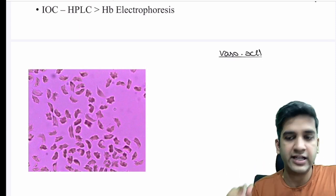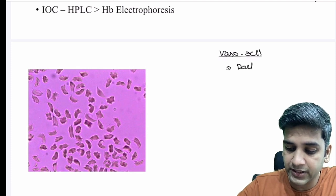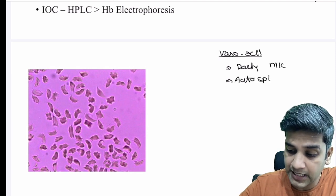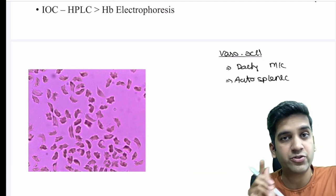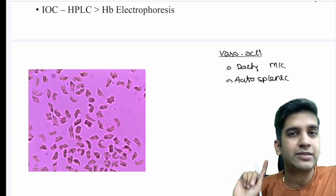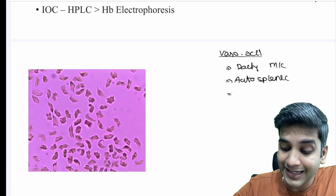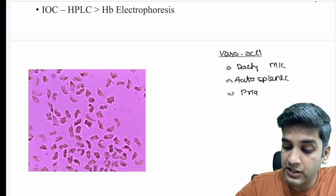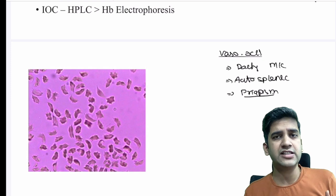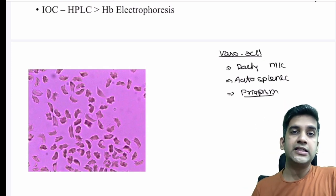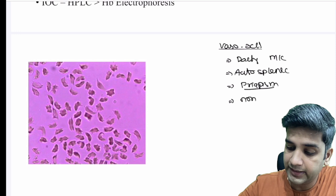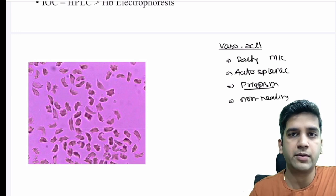Anemia will be present. Dactylitis is the most common presentation. Autosplenectomy is also an example of vaso-occlusive crisis — recurrent destruction of the spleen over years until it is completely gone. Priapism occurs in 40–50% of men with sickle cell anemia. A chronic non-healing leg ulcer is another classic feature — the deoxygenated reversible sickle RBCs block vessels causing ulcers that won't heal because granulation tissue cannot form properly.